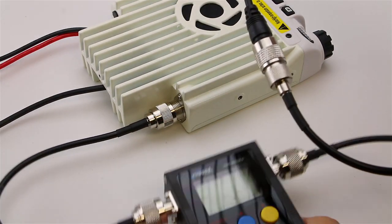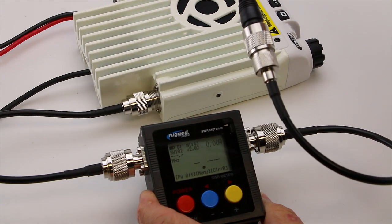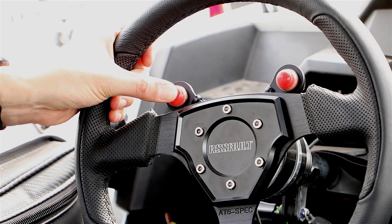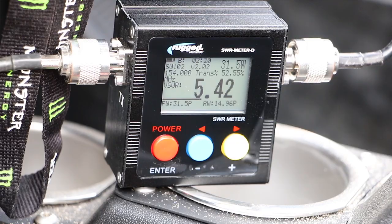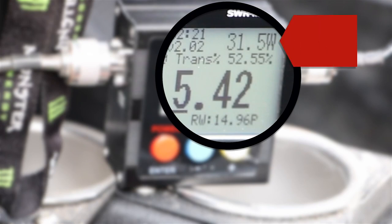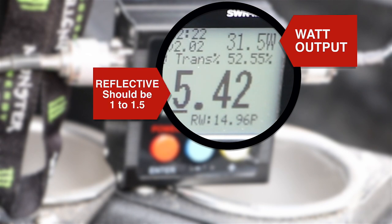With your radio powered on, press the button on your hand mic or the PTT button on your steering wheel to test a transmit. The top right corner of your SWR meter will indicate how many watts your radio is transmitting on, and the larger displayed number on the center of your screen is called reflective.